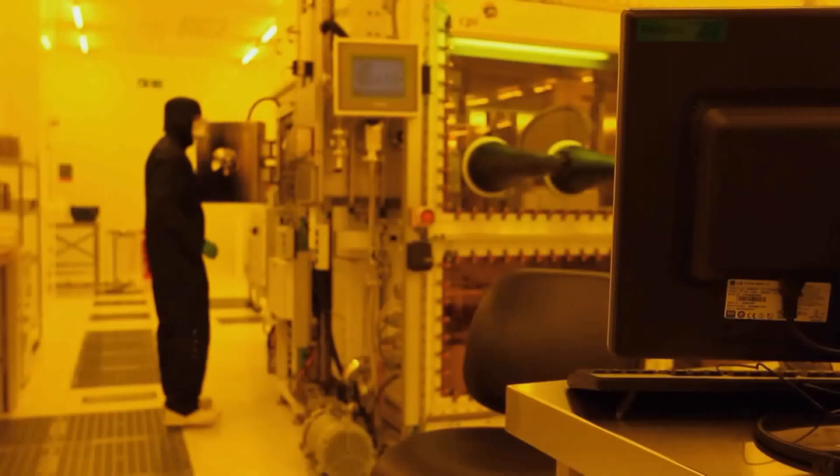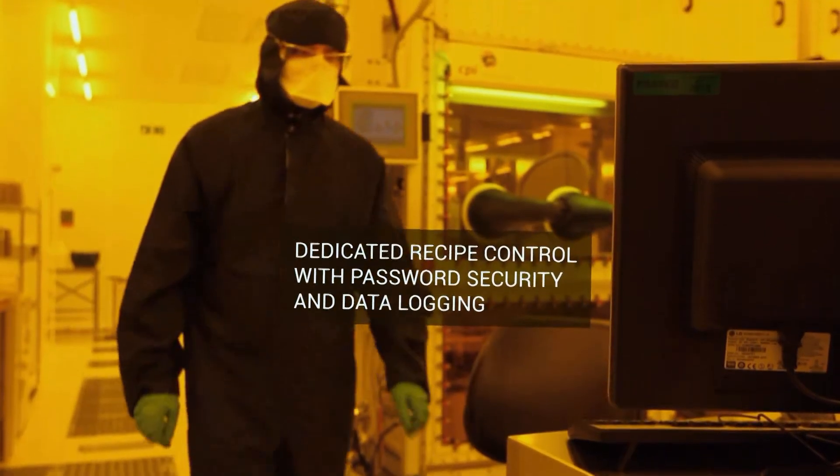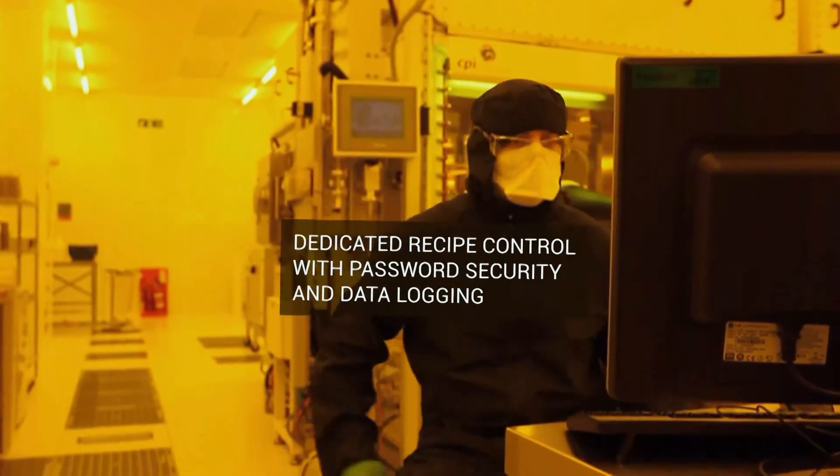The process commences by positioning the substrate cassette in the convection oven chamber. The chamber bakes the substrates, removing all traces of moisture.